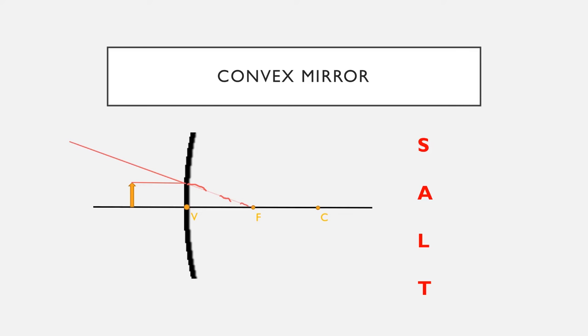We can then pick any of our other rules. The rule I'm going to choose is to go through F, and then we're going to see how that comes out parallel later.